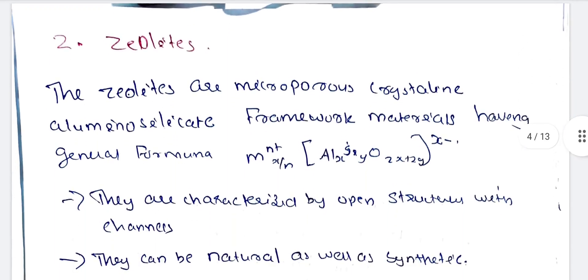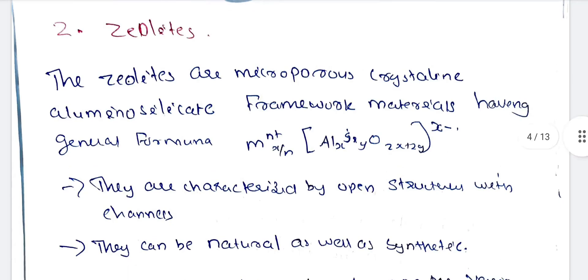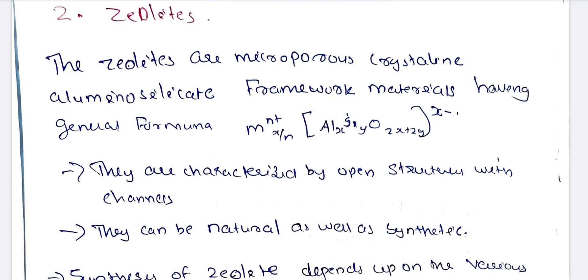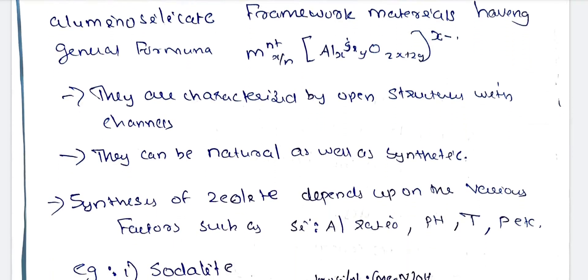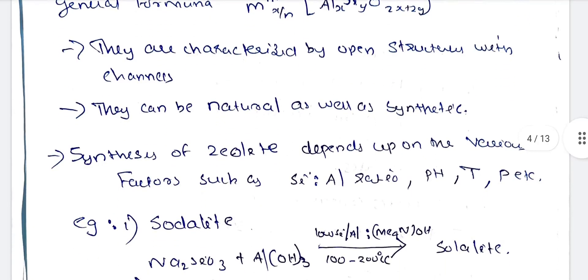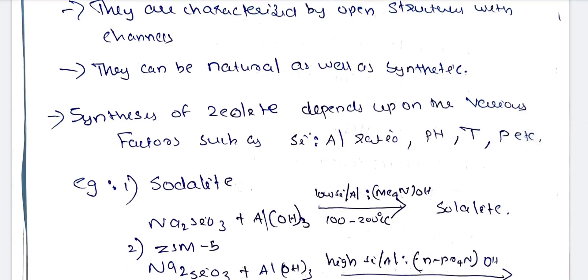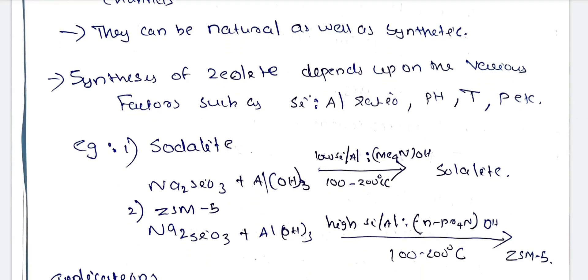Next are zeolites. They are characterized by an open structure with channels. They can be natural as well as synthetic. Natural zeolites and synthetic zeolites exist. The synthesis of zeolites depends upon various factors such as aluminum ratio, pH, temperature, pressure, and others.